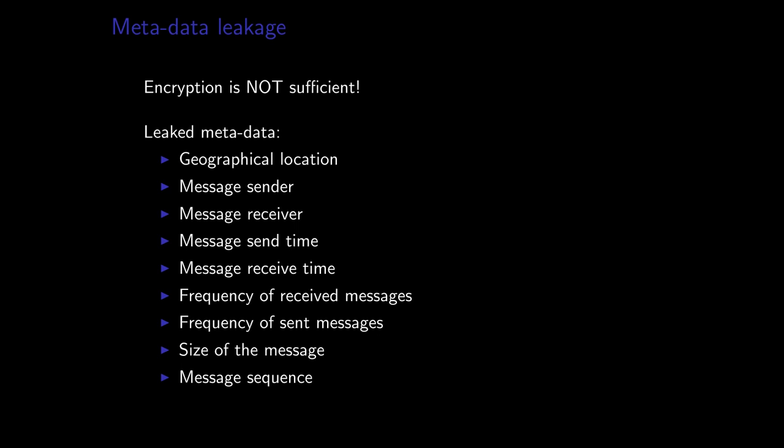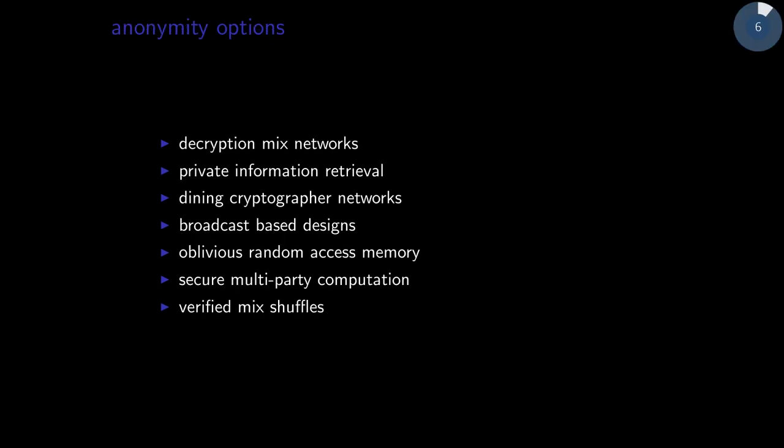The types of metadata leakage we're thinking of preventing are these types: location, geographical location is definitely important, but so is the message sender and receiver. What are our options for doing this? We feel that decryption mixnets are the best option because they scale really well in terms of having low computational overhead, and we think that they can scale to millions of users pretty easily for low bandwidth applications.